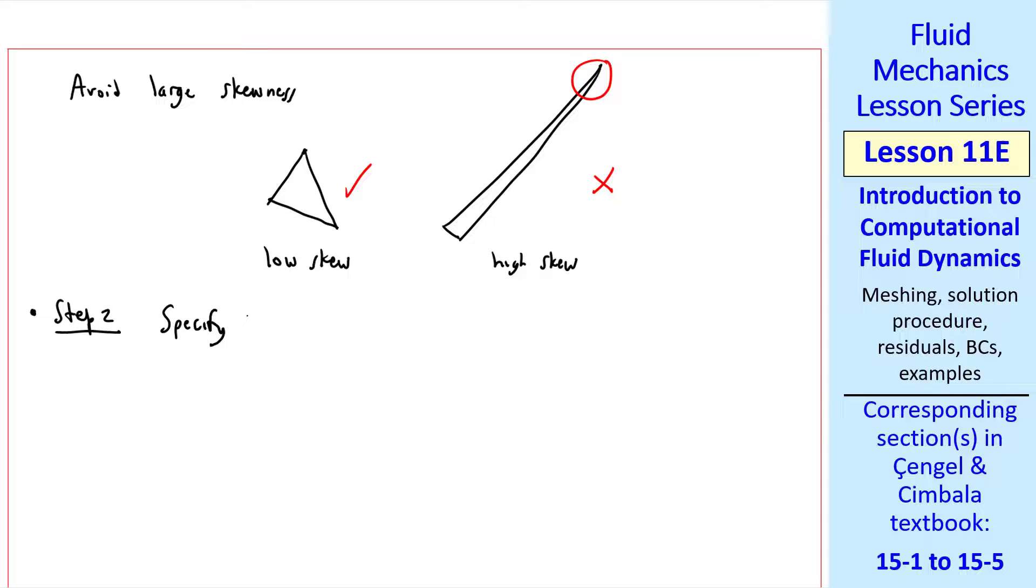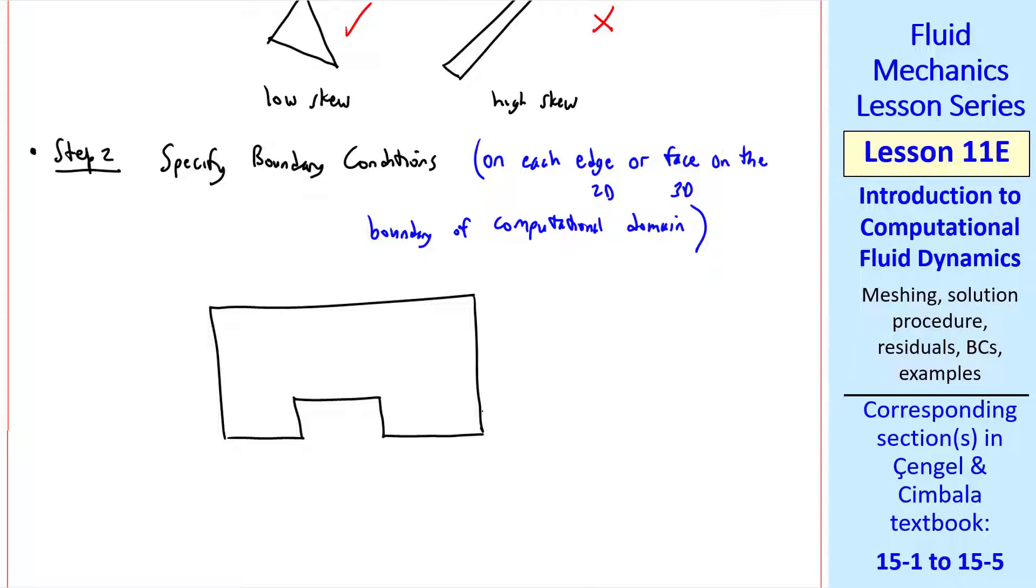Step two is to specify boundary conditions on each edge for 2D flow, or face for 3D flow, on the boundary of the computational domain. Again, for our simple example of flow over a rectangular block, we would specify a wall boundary condition here, here, and here. We specify some constant speed at the inlet. The terminology may vary between different CFD programs, but this is typically called a velocity inlet.